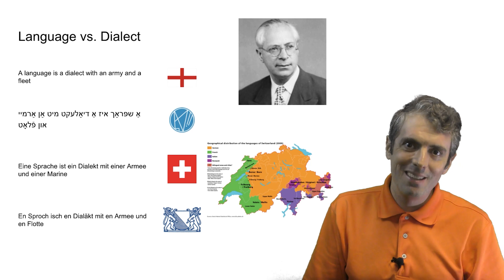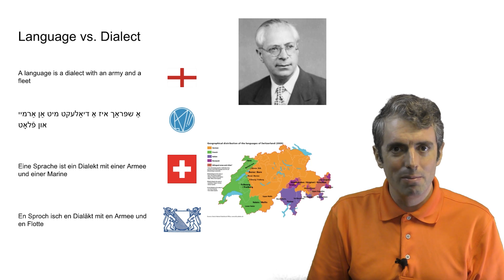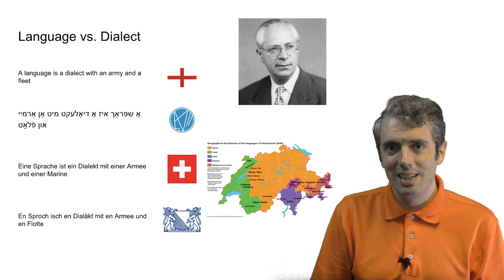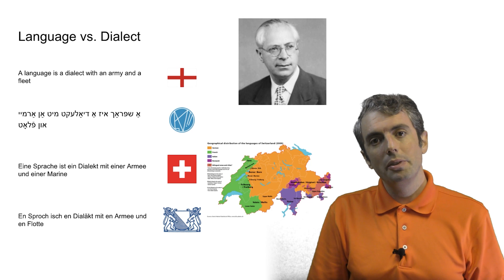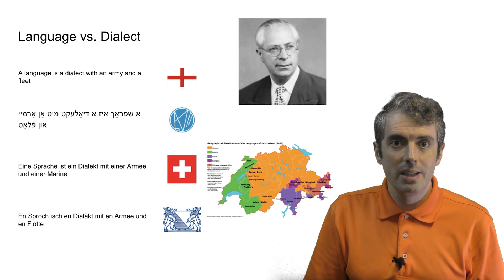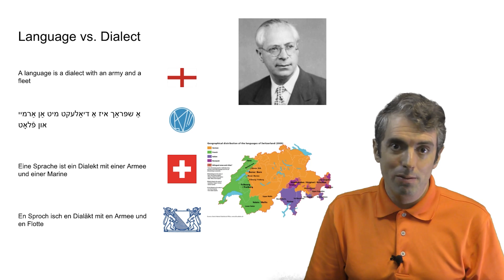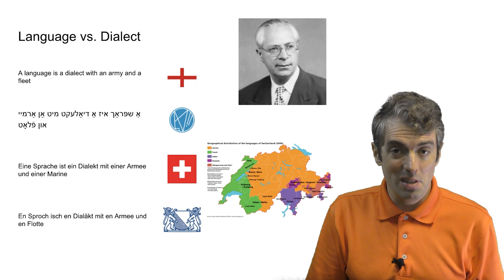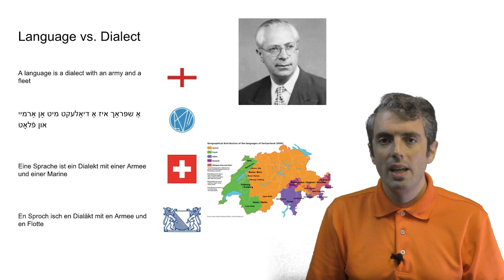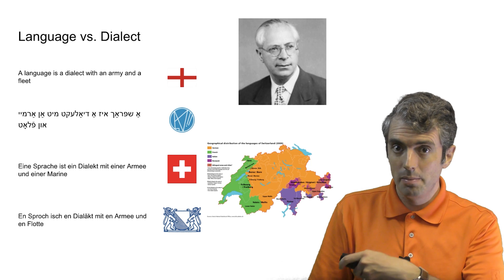The army and navy of Switzerland, at least the officers, use standard German very similar to what's spoken in Germany. Under this definition, when Israel was formed in 1948, with millions of refugees fleeing the Holocaust — many of them Yiddish speakers — if Israel had chosen Yiddish as its national language and used it for training its army and navy, Yiddish would have suddenly become a language. But instead, Israel recreated Hebrew. A similar fate happened for Dutch, which was very similar to German dialects like Frisian when it gained its independence from the Habsburgs.